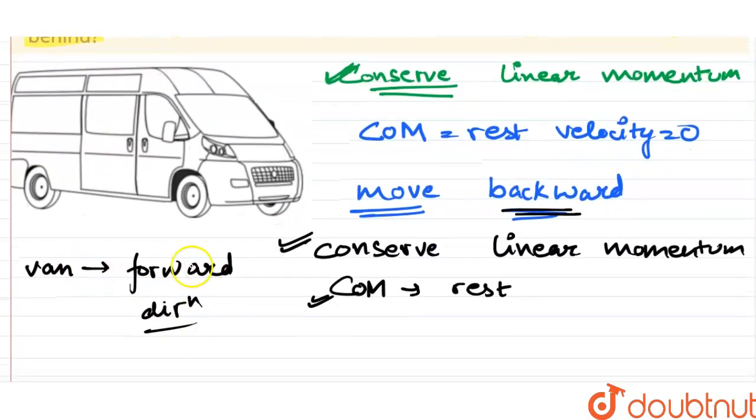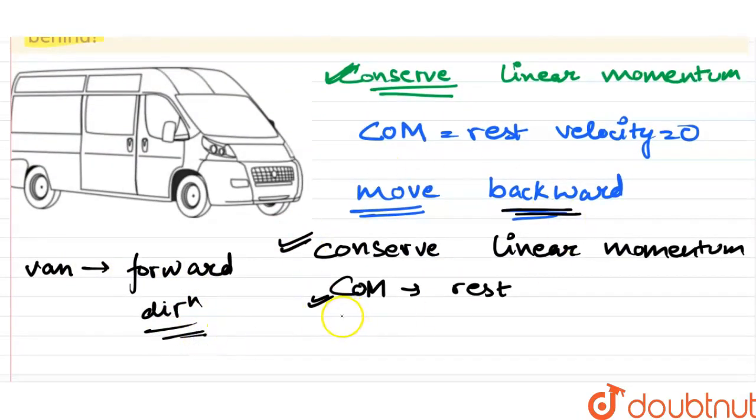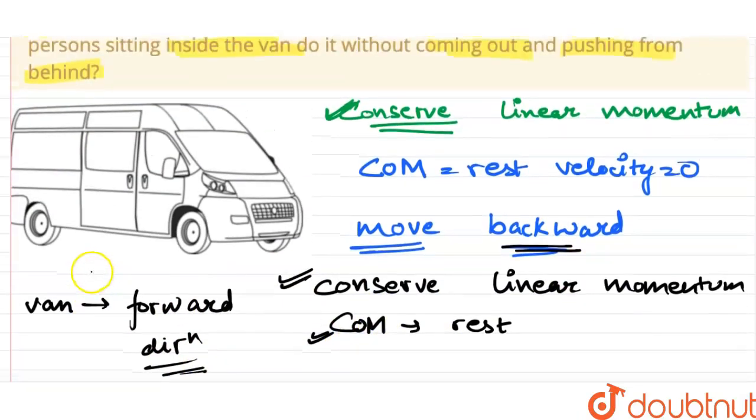Even though there is no friction, the van will move in the forward direction. If the person sitting inside moves in the backward direction to conserve linear momentum and keep center of mass at rest, the van will move in the forward direction. Thank you.